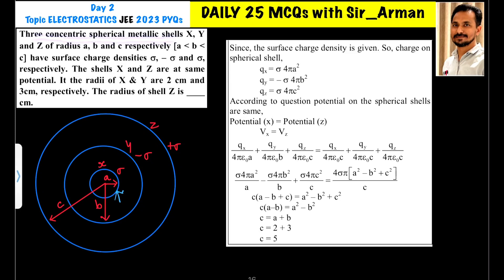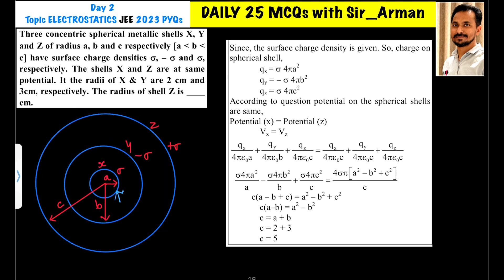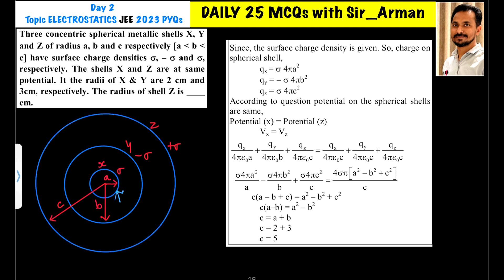We have three concentric spherical metallic shells X, Y, and Z with radii a, b, and c respectively. Shell X has the smallest radius a, and shell Z has the largest radius c. They have surface charge densities sigma, minus sigma, and plus sigma respectively. Shells X and Z are at the same potential. The radii of X and Y are given as two centimeters and three centimeters. We need to find the radius of shell Z.